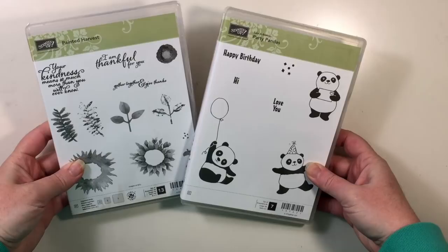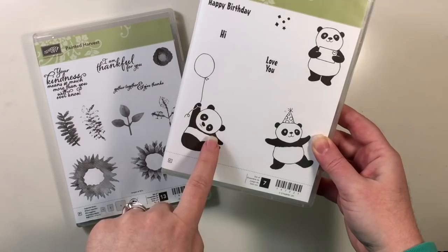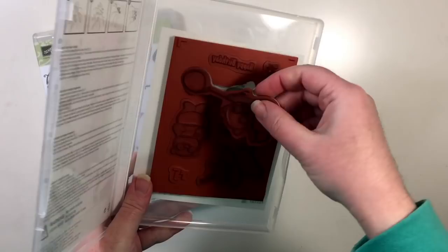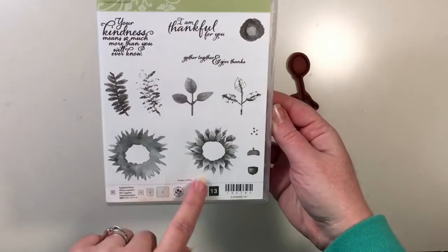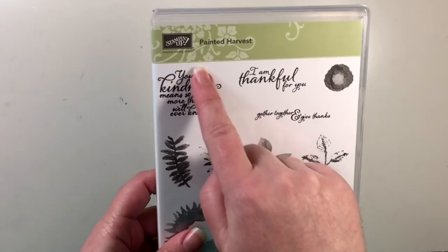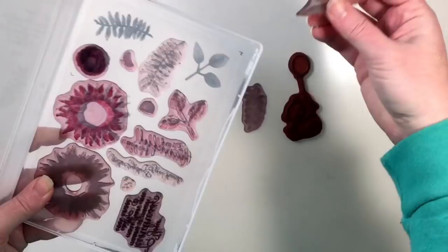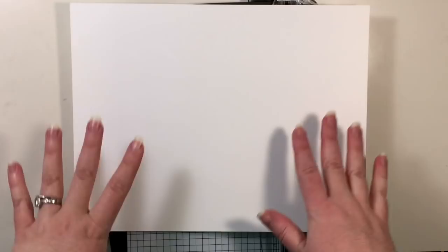So we are using these two beautiful stamp sets right here. We're going to be using the fun panda here that has the balloon, but we're not going to be stamping the balloon, just the panda. So I'm going to get him out and we're also going to use three stamps from this set here. We're going to use the solid fern, the solid leaves, and the sentiment right here.